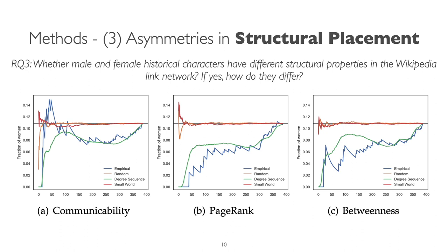In the case of communicability, we can see a short surge in the fraction of women. If we look at the top 50 nodes, this might indicate that there are some specific women that have high influence despite the overall under-representation of women. Some nodes may have high communicability although they are connected to only a limited number of nodes with very central roles. These nodes have a limited number of direct connections to the broader network, but they can still spread information and influence others through their powerful channels around them.